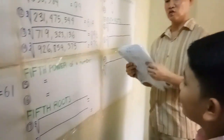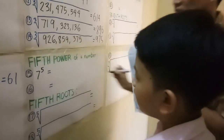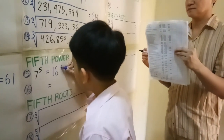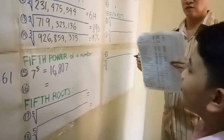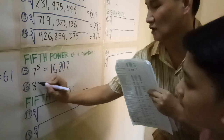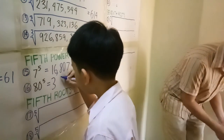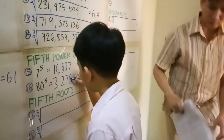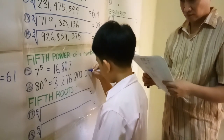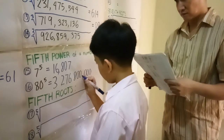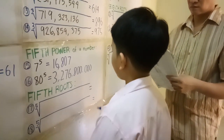So far so good. We proceed to the 5th power of a number. What is 7 to the 5th? 16,807. Bravo! What is 80 to the 5th? 3,276,800,000. Bravo!